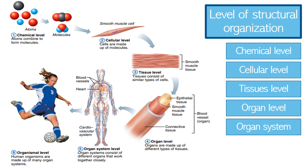The next level is the organ system level. An organ system is a group of organs that work together to accomplish a common purpose. For example, the heart and blood vessels of the cardiovascular system circulate blood continually to carry nutrition, oxygen, and waste to and from body cells. There are 11 organ systems which make up the living human being. These all levels combine to form an organism, which represents the highest level of structural organization: the organismal level.